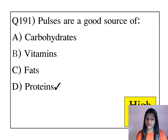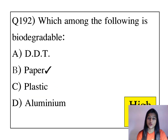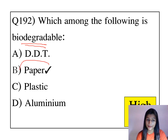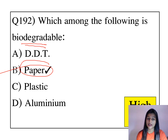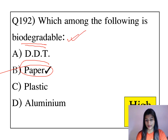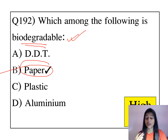Pulses are a good source of proteins. Which among the following is biodegradable? Paper is considered biodegradable. Tell me in the comment section below — what is the difference between biodegradable and non-biodegradable?